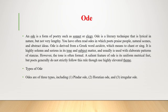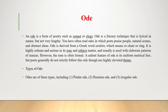The regular or Pindaric ode in English is a close imitation of Pindar's form, with all the strophes and antistrophes written in one stanza pattern and all the epodes in another. This form was introduced into English by Ben Jonson's 'Ode to the Immortal Memory and Friendship of the Noble Pair Sir Lucius Cary and Sir H. Morison,' written in 1629. It can also be studied in Thomas Gray's 'The Progress of Poesy,' written in 1757.